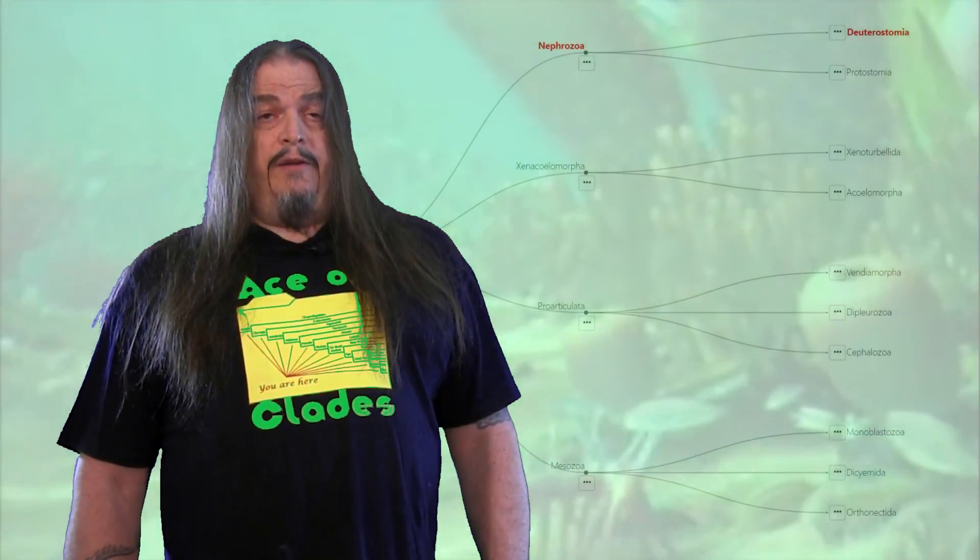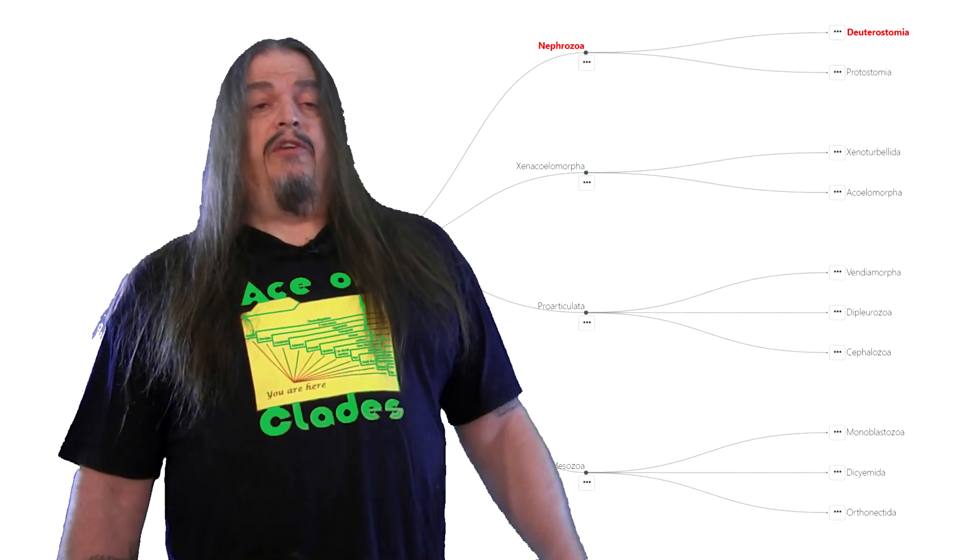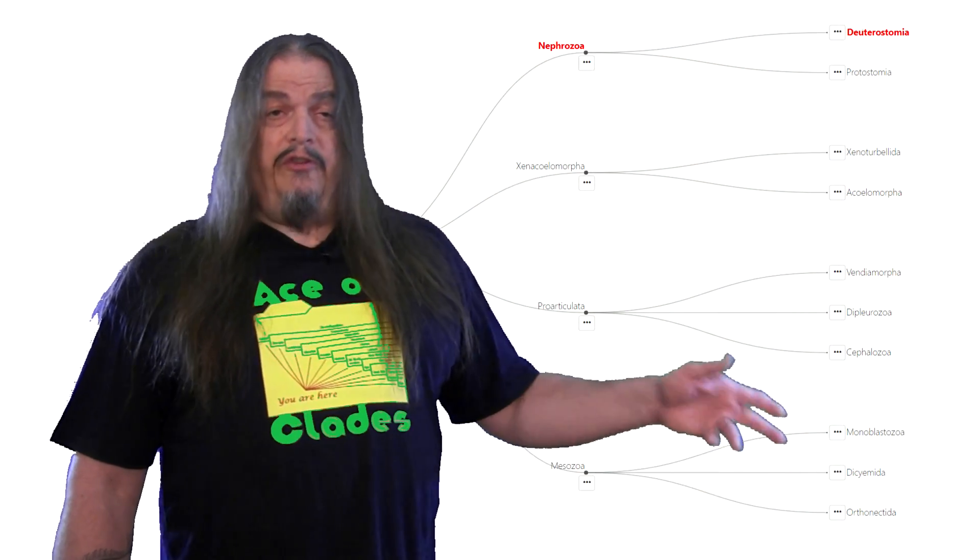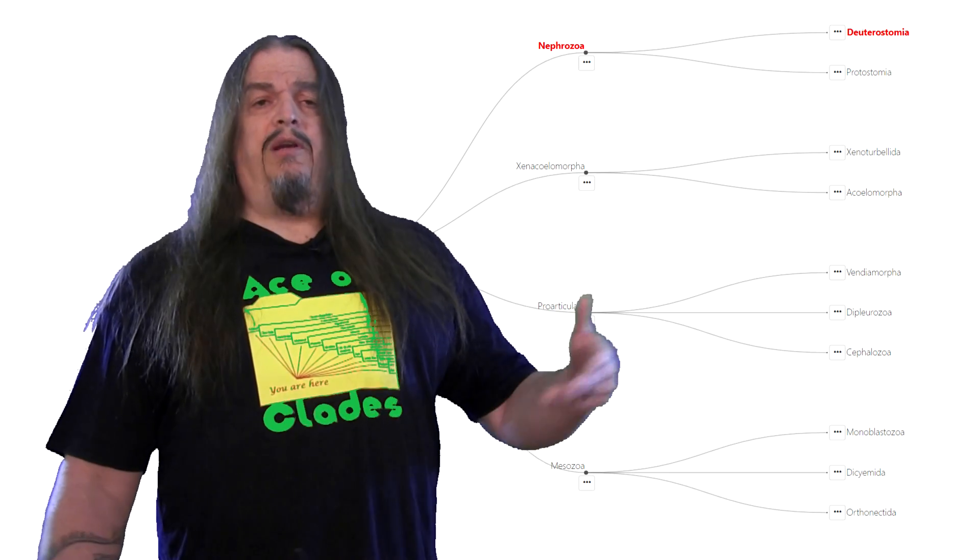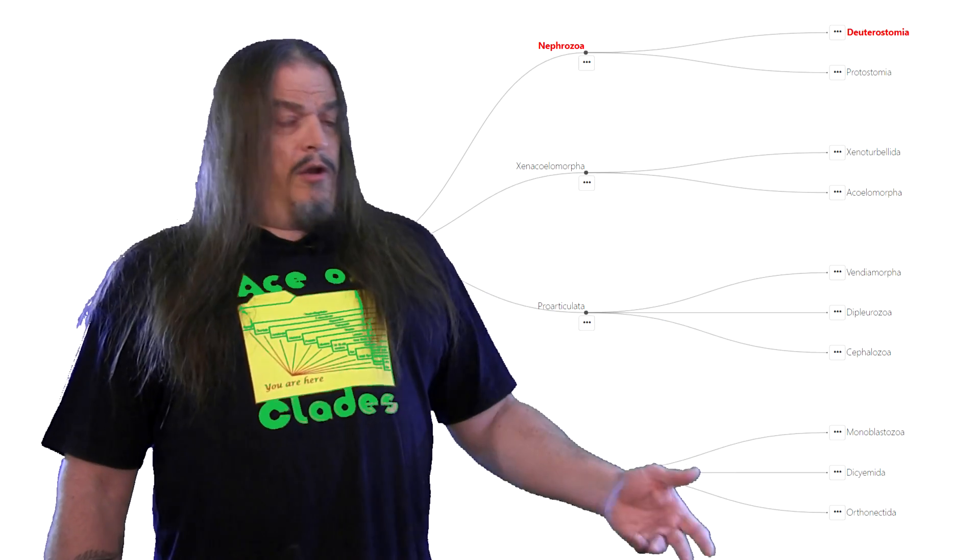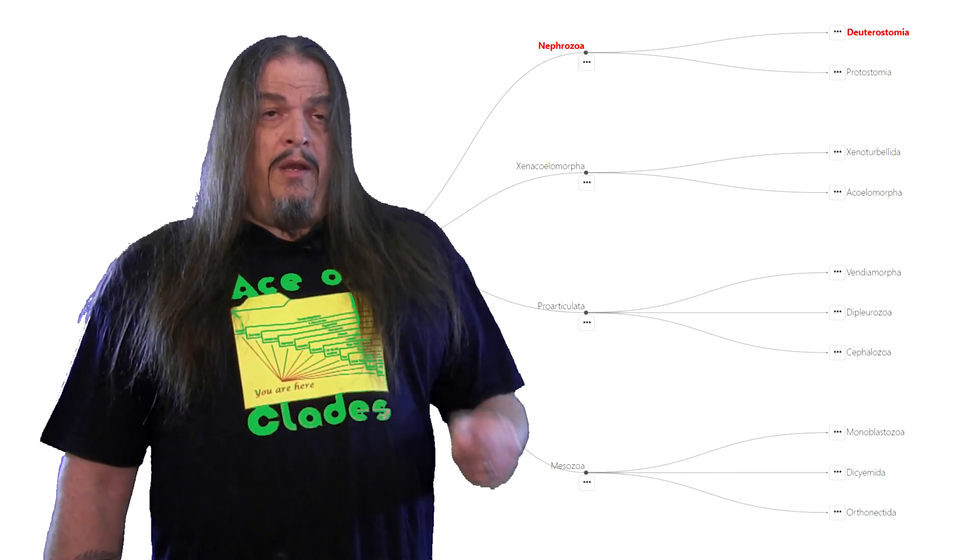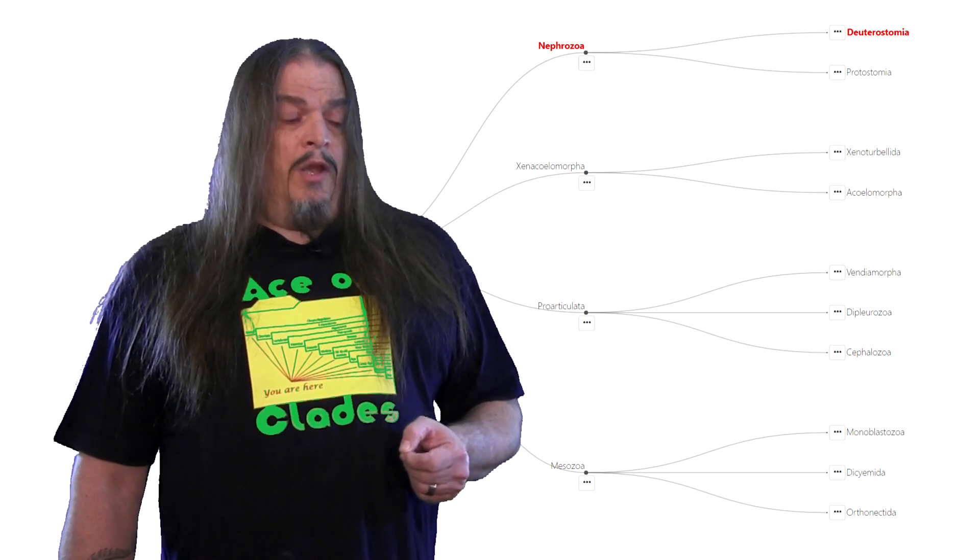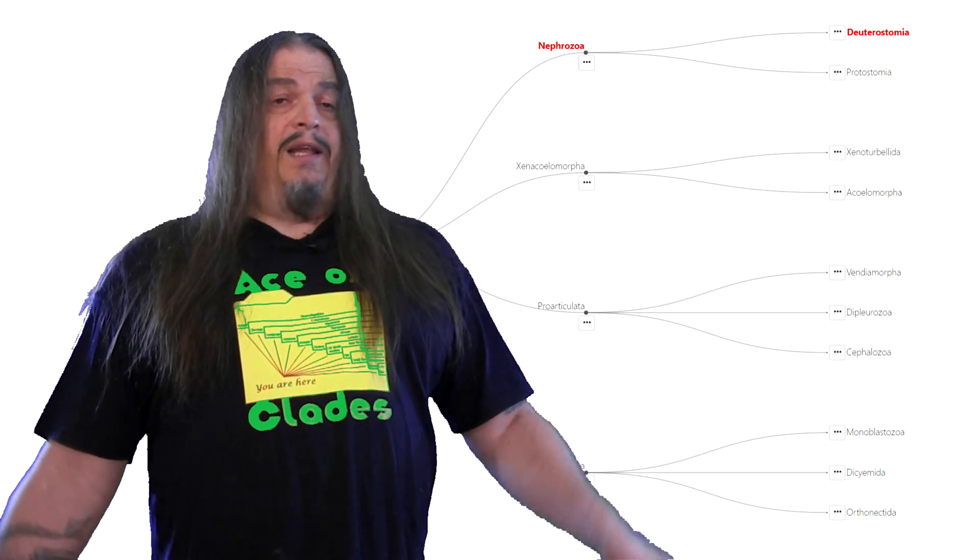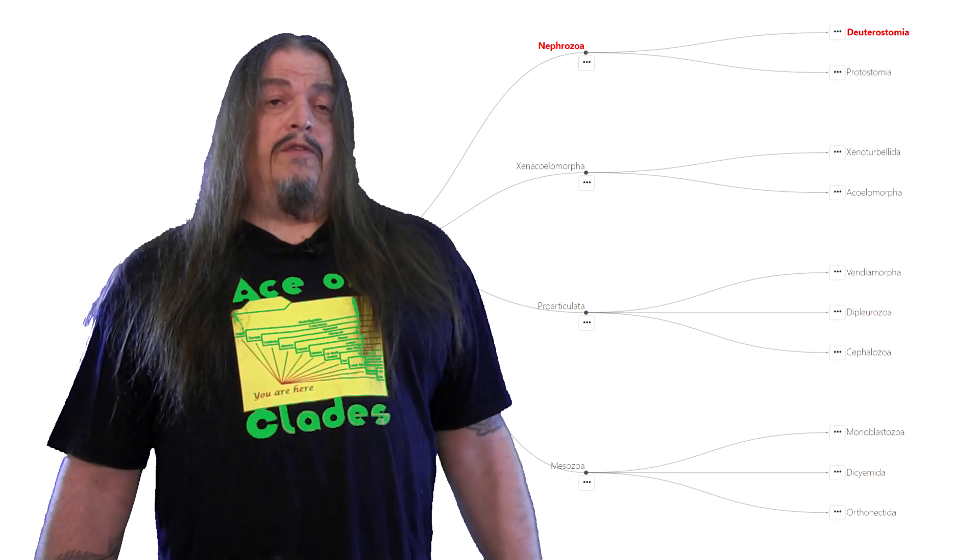So regardless whether you accept evolution yet, if you followed along on all the ancestral clades and developmental stages discussed so far, you should accept that you are a bilaterally symmetrical animal and all that that implies. The question now is, do you also have the guts, literally, to admit that you're a nephrozoan coelomate?